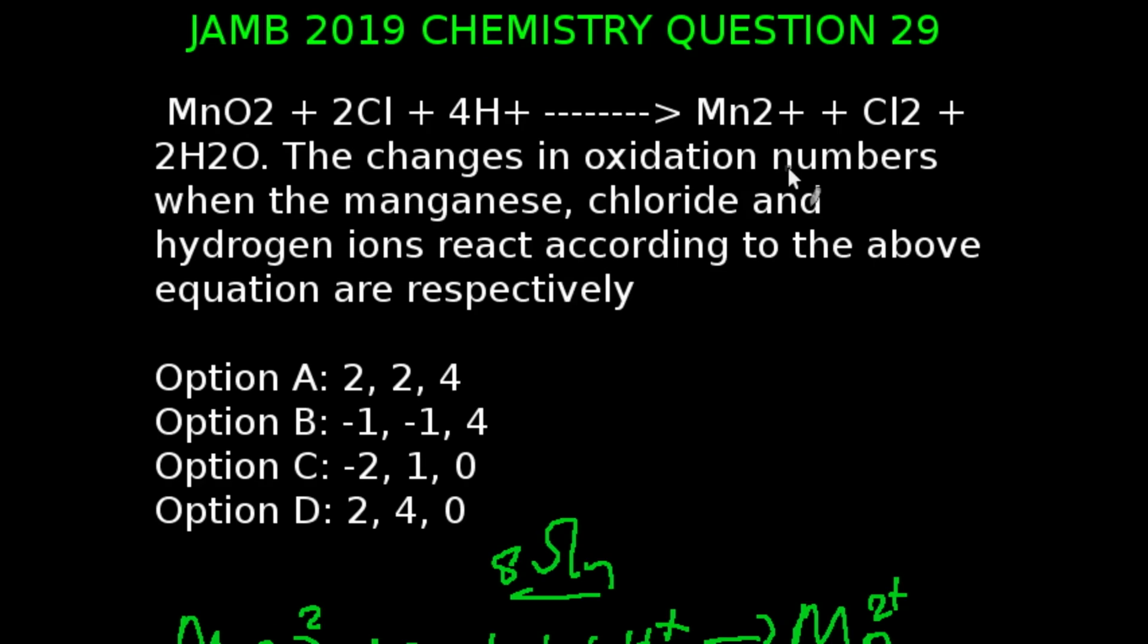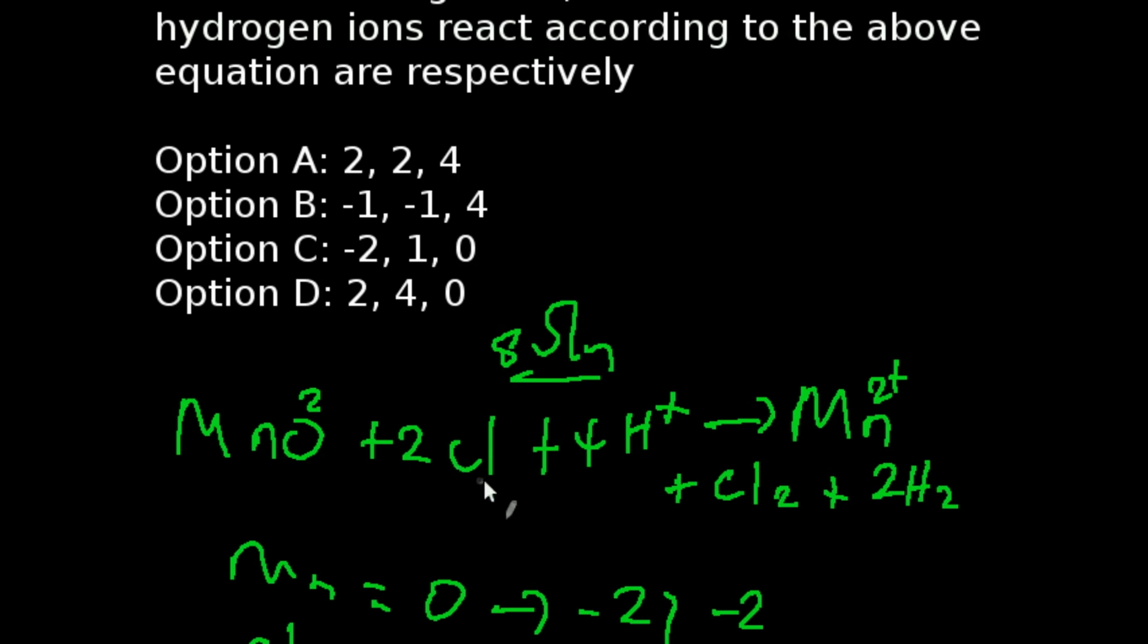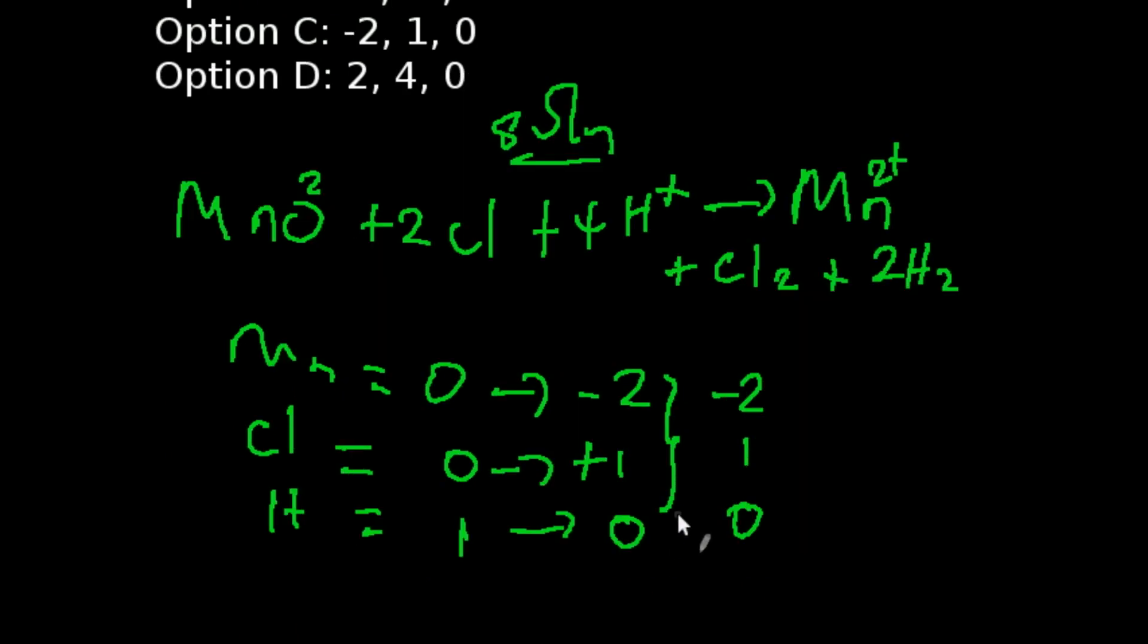Question 29 of JAMB Chemistry 2019. We're given an equation here. And the question is, the changes in oxidation numbers when the manganese, chloride, and hydrogen ions react according to the above equation respectively. So we have rewritten the equation involving manganese, chlorine, and hydrogen. And these are our products: Manganese²⁺, chlorine, plus hydrogen. If you look at this equation carefully, the oxidation number of manganese has changed from 0 to minus 2.